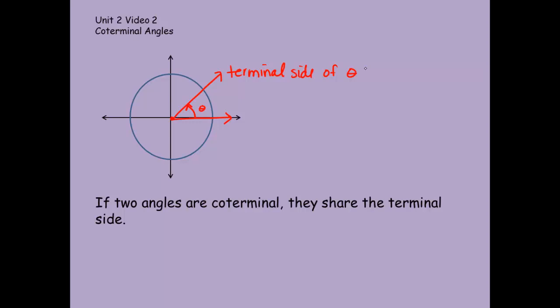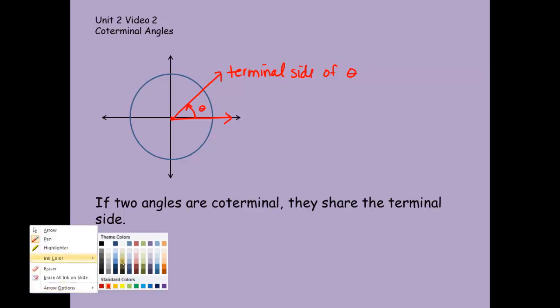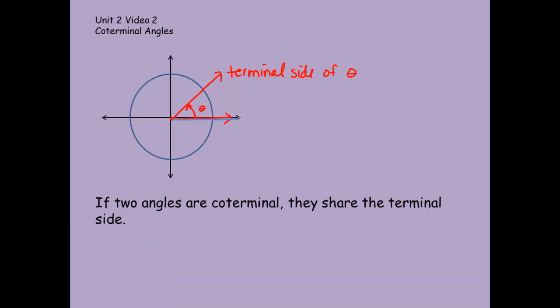I could draw another angle, again beginning on the positive x-axis, but going up and over, and here would be the terminal side. Let's call this angle alpha. So this would be the terminal side of alpha. Terminal as in it stops, it ends there. So two angles are coterminal if they end in the same place essentially.